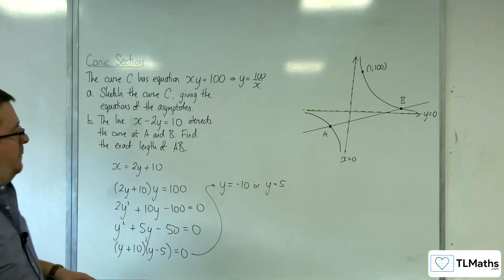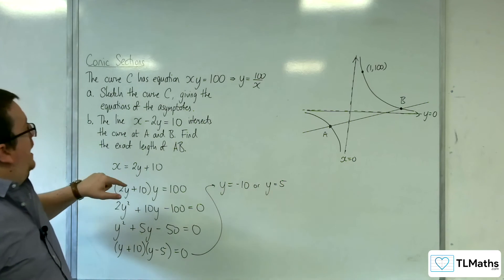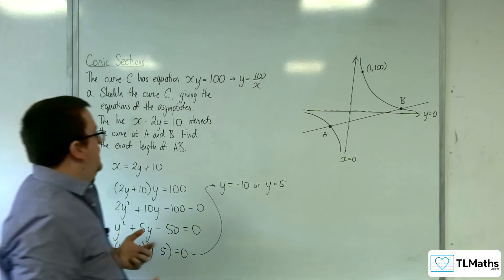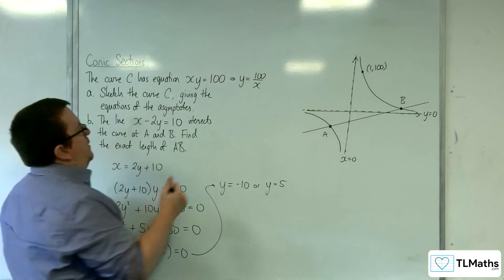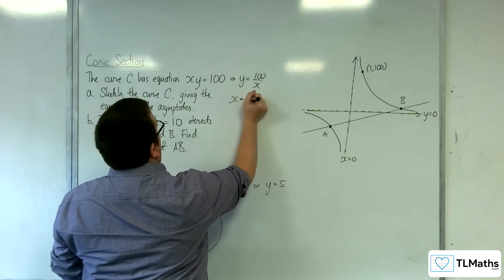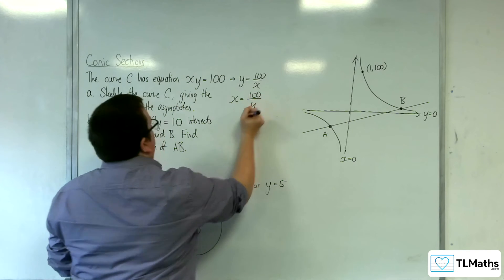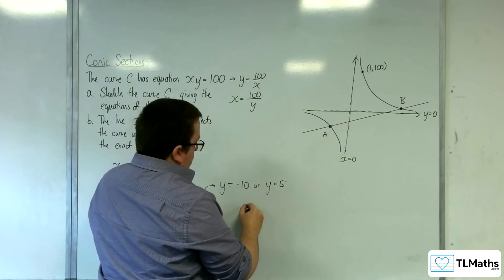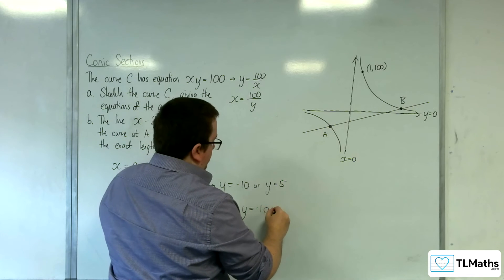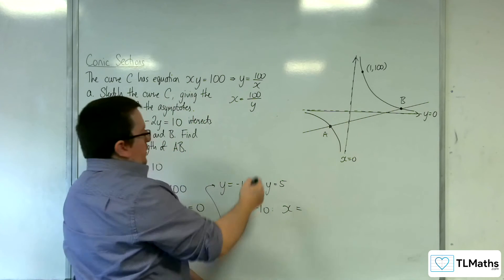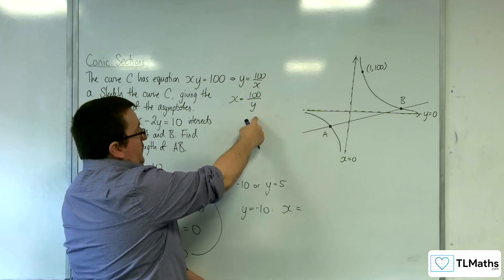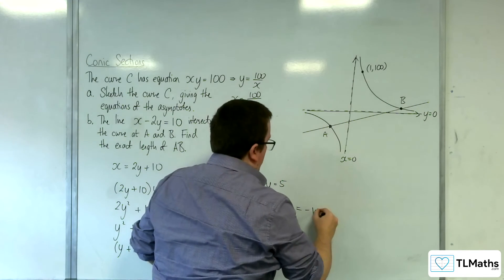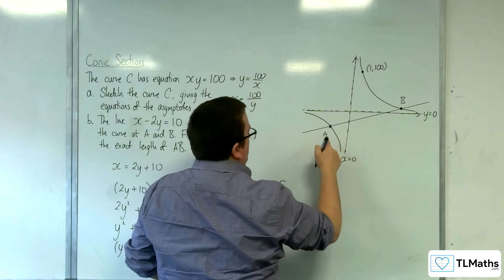Now I can substitute those in. I could rearrange this to get x is equal to 100 over y, and then substitute them into that one. So when y equals minus 10, x is equal to 100 divided by minus 10, which is minus 10. So minus 10, minus 10 will be A.